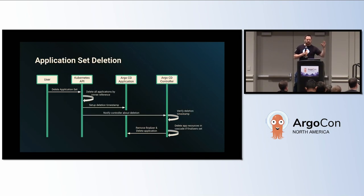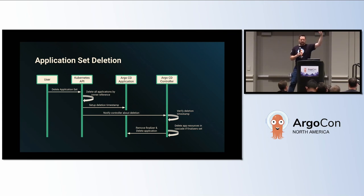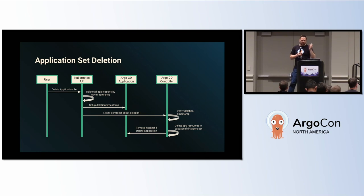When we introduce Argo CD — starting with application sets — if a user deletes an application set, because applications under an application set are by owner reference, the owner of that reference is now deleted. All of those applications are automatically marked for deletion, adding a deletion timestamp. This notifies the Argo CD controller, which verifies the timestamp, and if finalizers are set — which by default they are on application sets — it marks all of those resources for deletion.